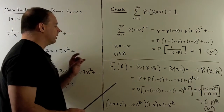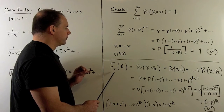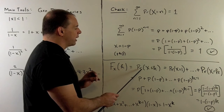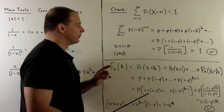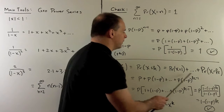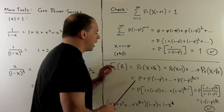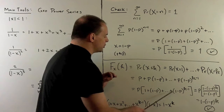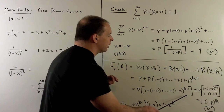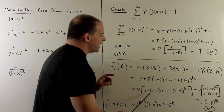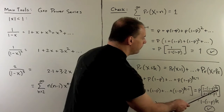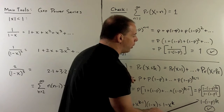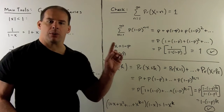Now for the cumulative probability distribution: if we evaluate this at the integer K, we're looking at P(X ≤ K). We take the sum of these probabilities, write them out, and factor out a P. Here we don't have an infinite series — it's just a finite sum. When we substitute this out, the bottom collapses to a P; they cancel, and we get 1 minus (1 minus P) to the K, as promised.